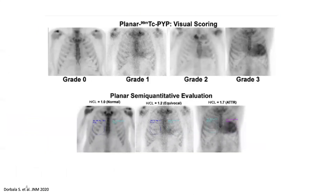As for the planar semi-quantitative evaluation, we can draw a region of interest around the heart and on the contralateral hemithorax. According to the ratio between the heart and the contralateral region, we can define the different grades. A ratio equal to 1 represents a normal scan; a ratio of 1.2 is equivocal, similar to Perugini 1; and a ratio higher than 1.7 indicates positivity for amyloidosis.